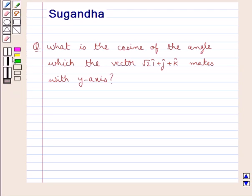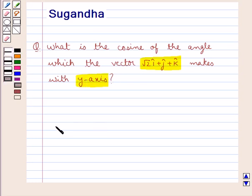Hello and welcome to the session. In this session we discuss the following question: What is the cosine of the angle which the vector √2 î + ĵ + k̂ makes with the y-axis?